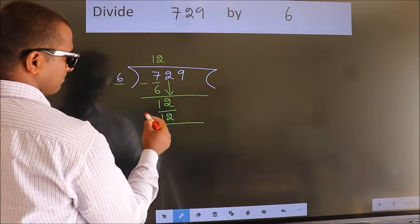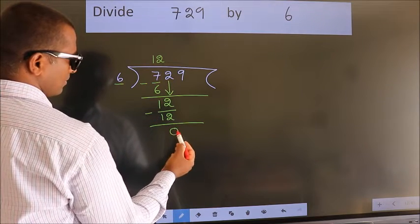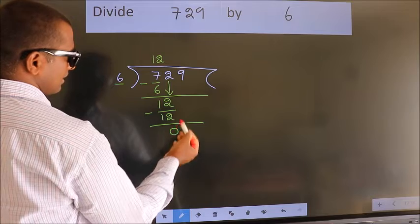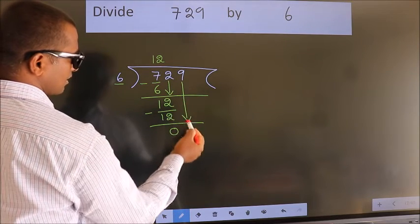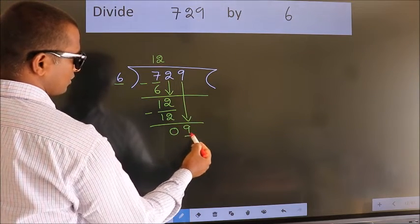Now we subtract. We get 0. After this, bring down the beside number. So 9 down, making 9.